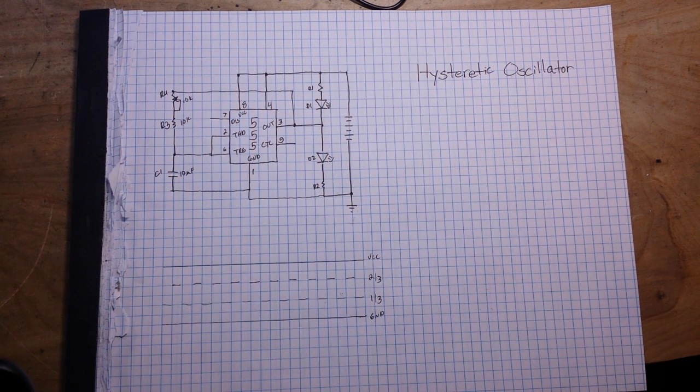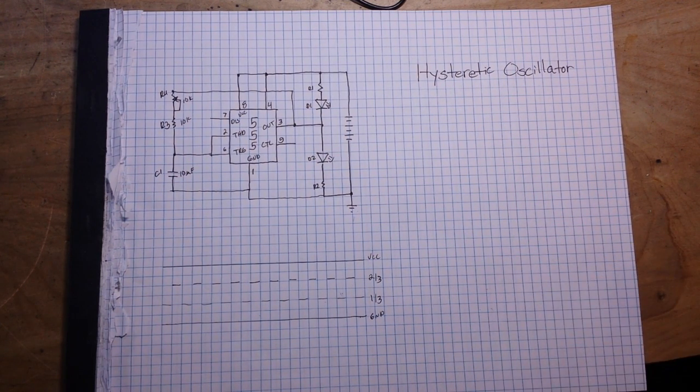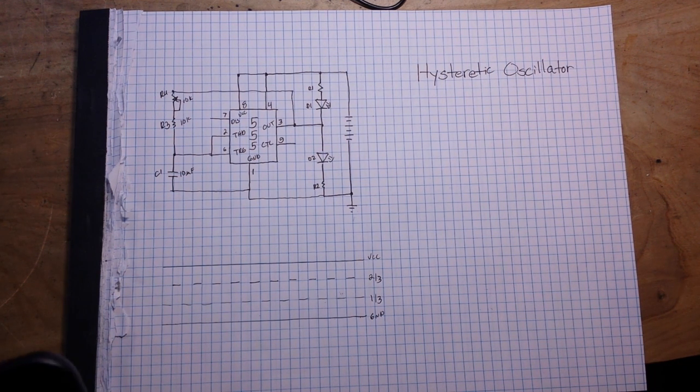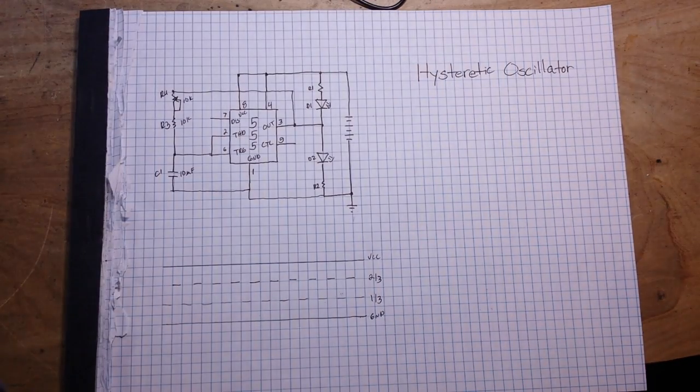The easiest explanation, the one that I keep front of mind: hysteresis is a dead zone. It's a period in a circuit where nothing's really happening. The actual definition is the phenomenon in which the value of a physical property lags behind changes in the effect causing it.